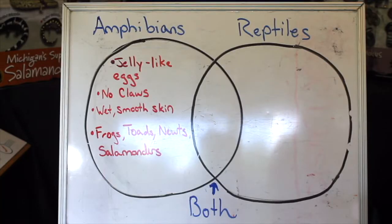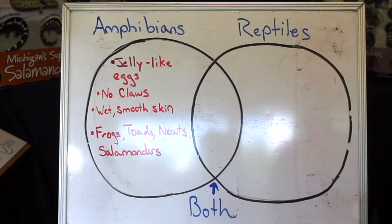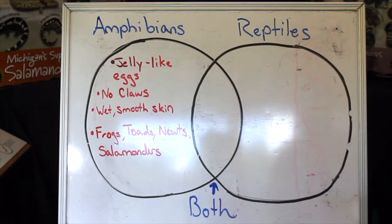Besides jelly-like eggs, amphibians don't have claws. Some will have more toes on their front feet versus their back, but they don't need claws in order to move. Many of them have webbed feet to swim underwater, or can bury themselves into the ground using their powerful legs. Amphibians have smooth, wet skin — they breathe or drink using their skin, so in order for that to work, their skin must be wet.